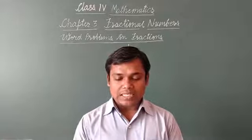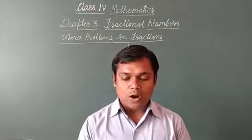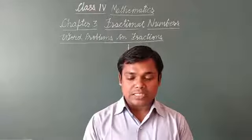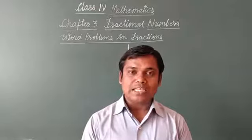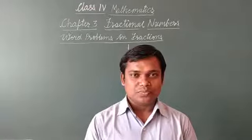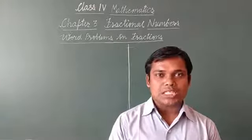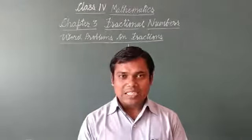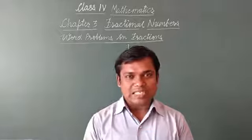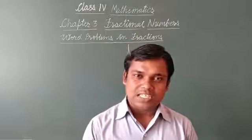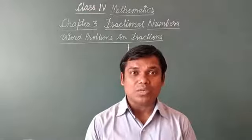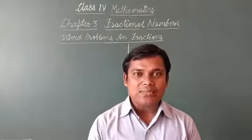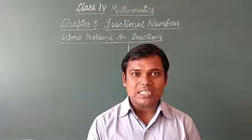It says Mickey ate 1/2 kg of sweet and Tiki ate 3/10 kg of sweet. Who ate more? It is given that two girls are there — one is Mickey and the other one is Tiki. They have eaten sweets in fractions, and the question is asking who has eaten more. That means two fractions are given to us and we have to compare them to know who ate more.